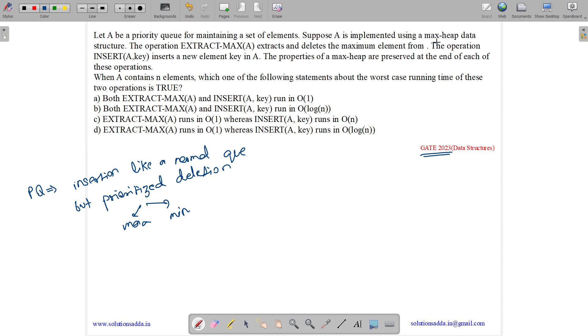Suppose A is implemented using max heap data structure. A priority queue can be implemented using sorted array, using an unsorted array, or using a max heap. If we have a maximum priority queue, max priority queue means every time we need to delete the maximum element, then it can be implemented using a sorted array, unsorted array, or a max heap. So here it is implemented using a max heap.